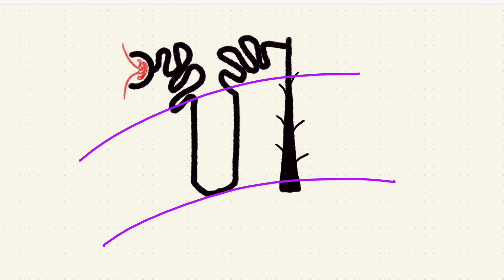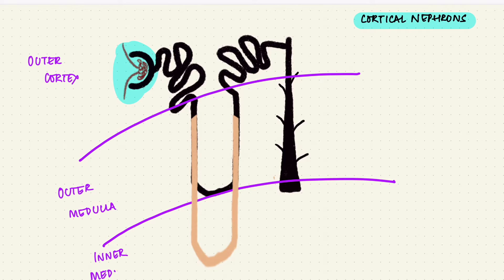Most of the nephrons have their glomerulus in the outer part of the cortex so the loop of Henle will reach only up to the outer medulla. These are cortical nephrons. Around 25% of the nephrons have their glomerulus lower down in the cortex so the loop of Henle reaches into the deeper medulla. These are juxtamedullary nephrons.